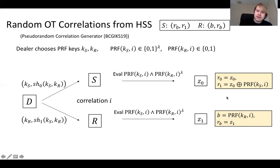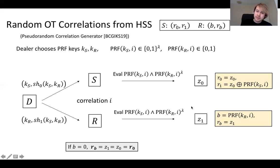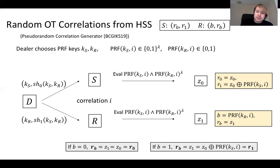On the sender's side, one string is just its output share, and the other is its output share XORed with its own PRF evaluated at i. On the receiver's side, the string is their output share and the choice bit is their PRF value. To check correctness: if B is zero, the parties computed the all-zero string under HSS, so Z0 equals Z1, meaning R_B equals R0. If B equals one, Z0 XOR Z1 equals the sender's PRF value, so R_B equals R1.